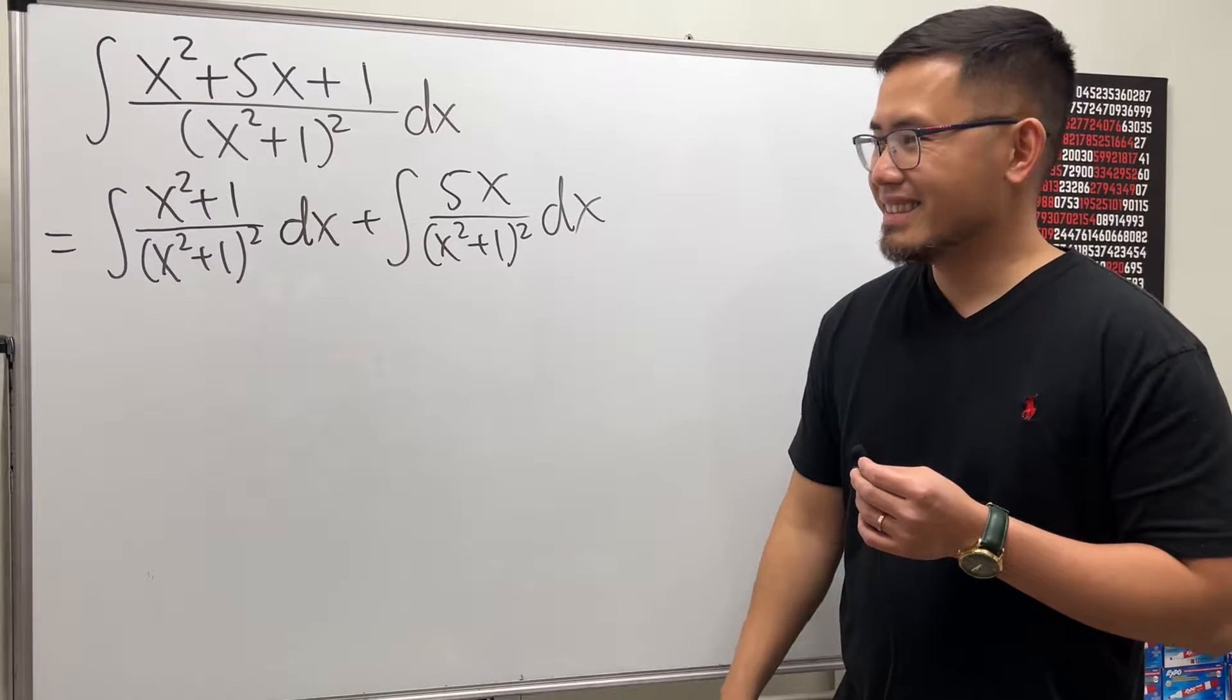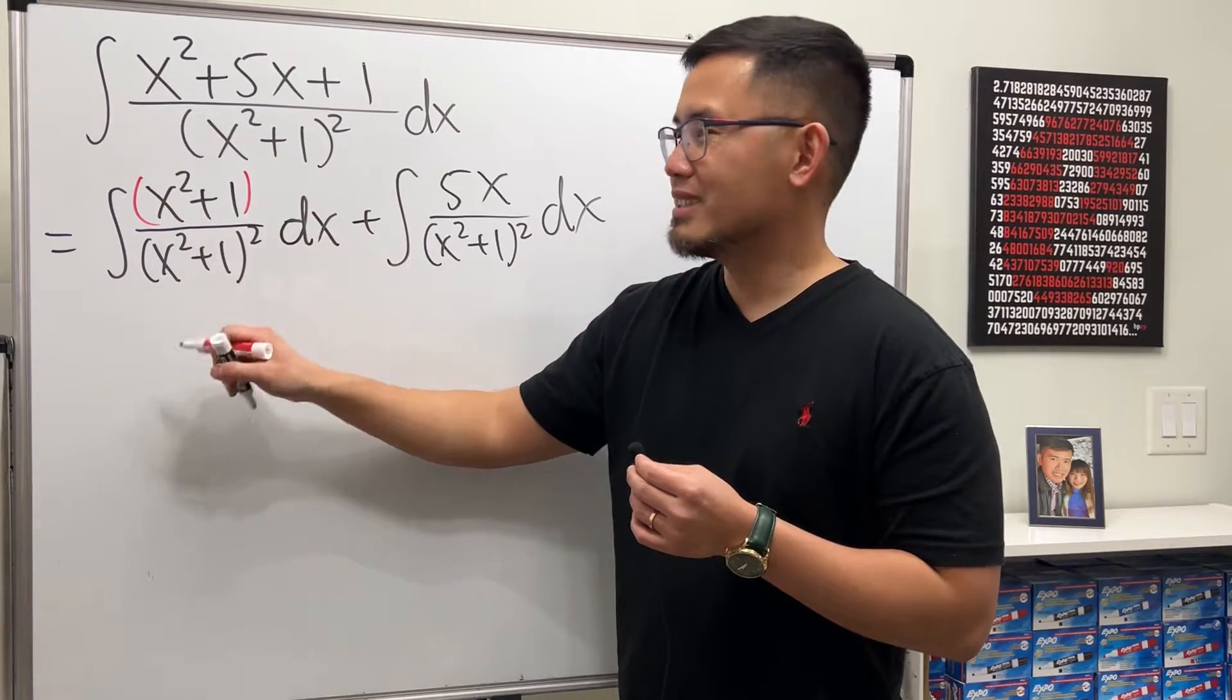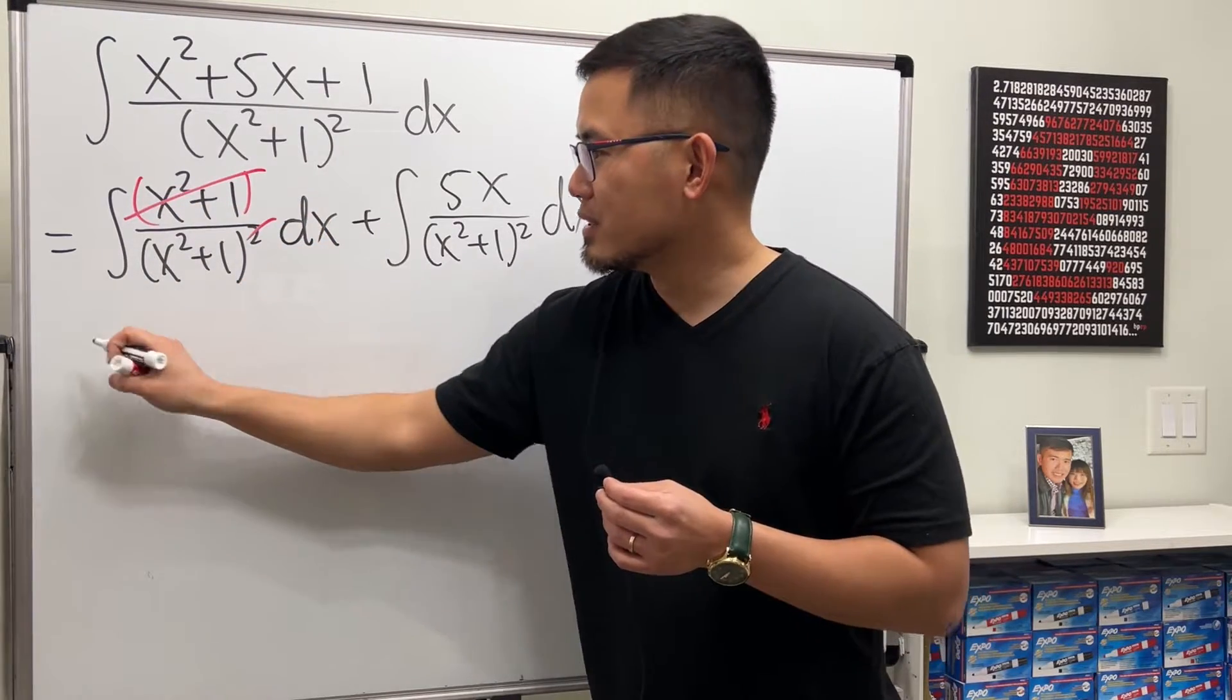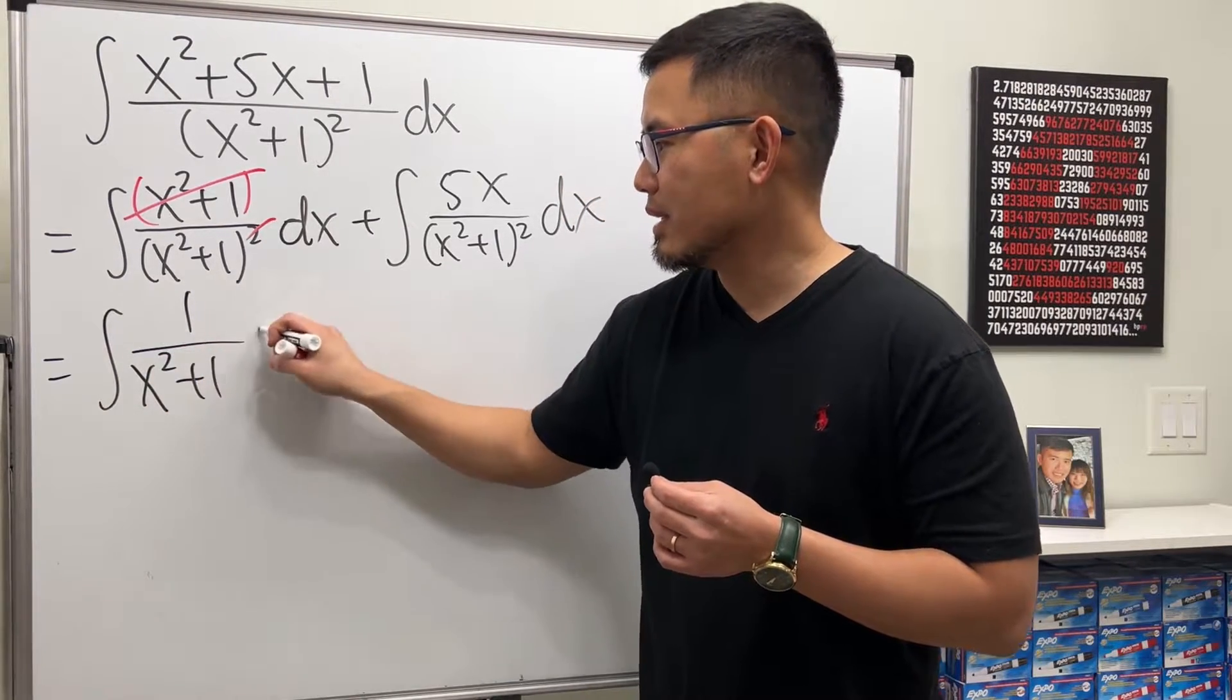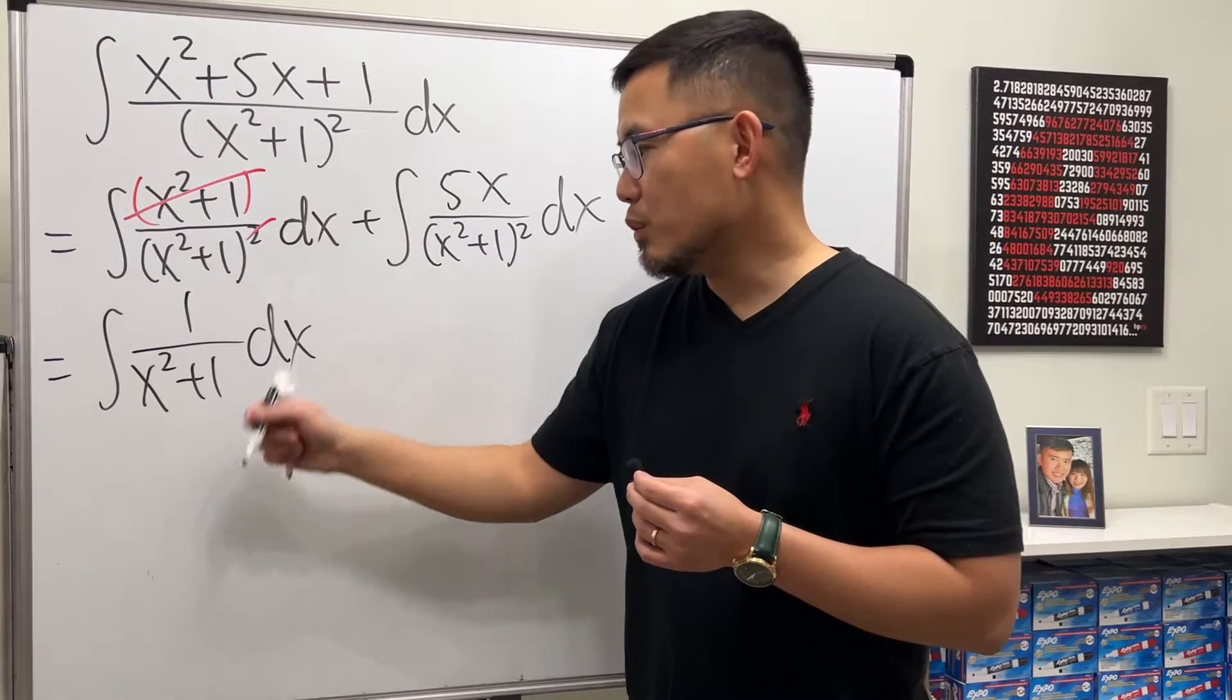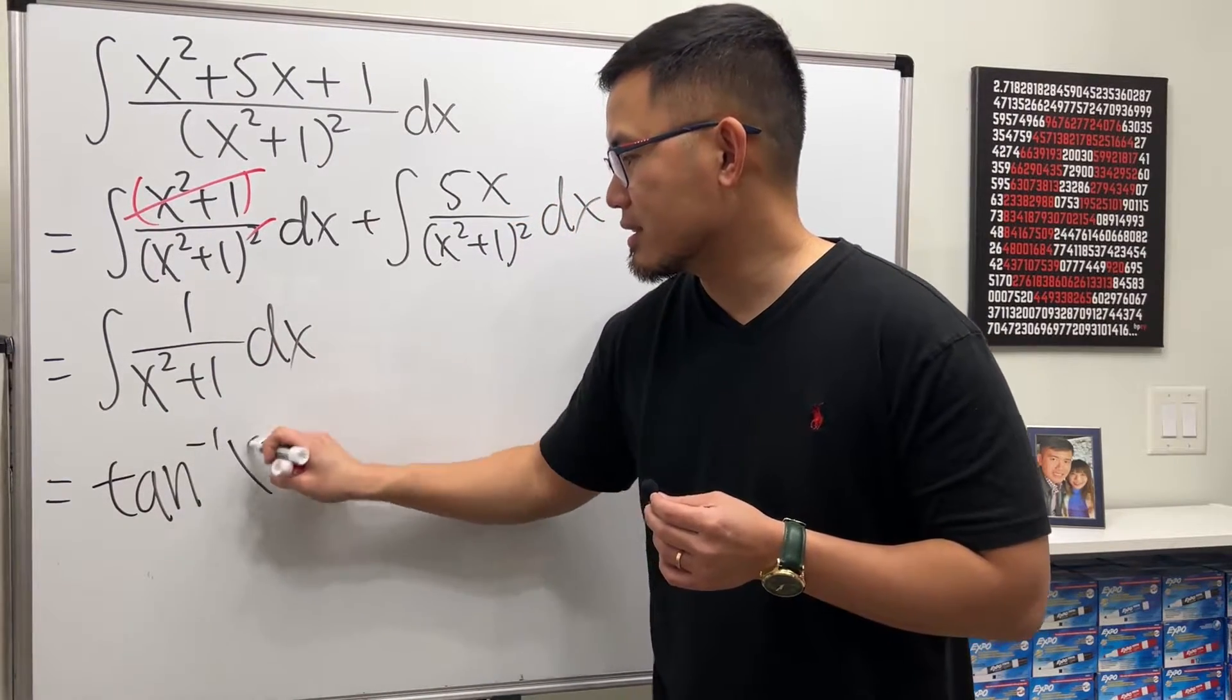So now, how do we do it? For the first one, isn't this the same as that? So we can cancel one of them out. So the first integral is just asking you the integral one over x squared plus one dx. And you're done with that because that is just inverse tangent of x, and then you are done.